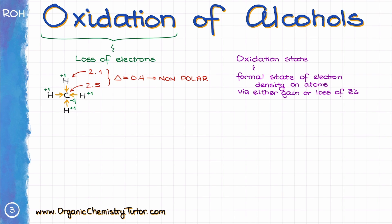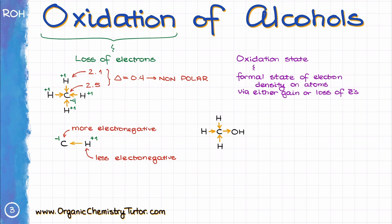Importantly, those are not actual charges on the atoms. Think of it as the atom with the lower electronegativity pushing electrons toward the atom with higher electronegativity, or equivalently, the more electronegative atom pulling electrons away. The atom that pulls electrons toward itself gets negative 1 from each bond, and the atom that gives electrons gets plus 1 from each bond. So the carbon atom gains electrons from bonds to hydrogens and loses electrons through the bond to oxygen — giving it an oxidation state of negative 2. It gained negative 3 from hydrogens and lost plus 1 to oxygen.